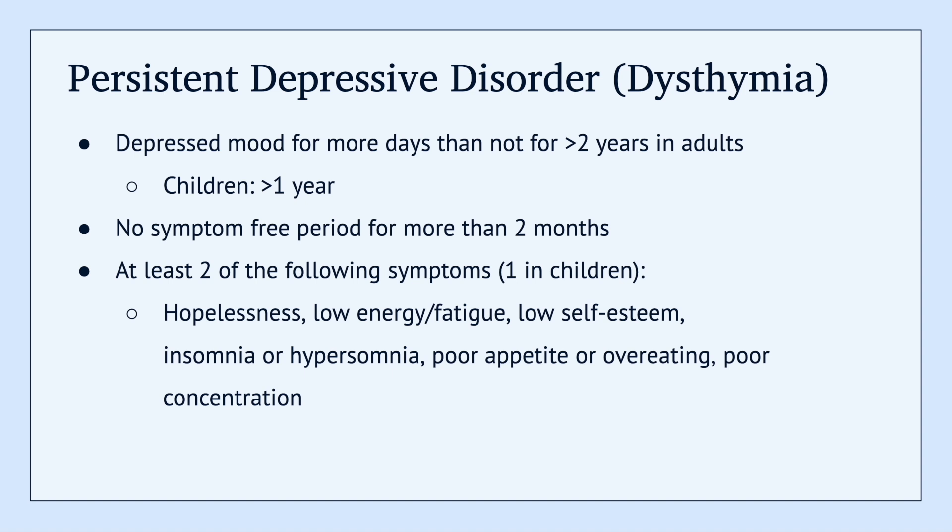Additionally, they'll have at least two of the following symptoms in adults, or one in children. These could be hopelessness, low energy, low self-esteem, insomnia or hypersomnia, poor appetite or overeating, or poor concentration. So you need at least two of these in adults or one in children.